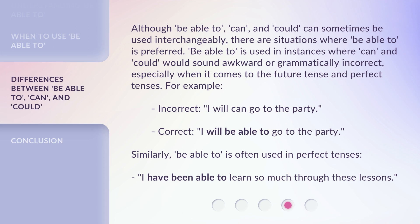For example, incorrect: 'I will can go to the party.' Correct: 'I will be able to go to the party.' Similarly, 'be able to' is often used in perfect tenses: 'I have been able to learn so much through these lessons.'